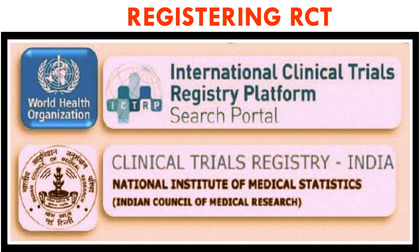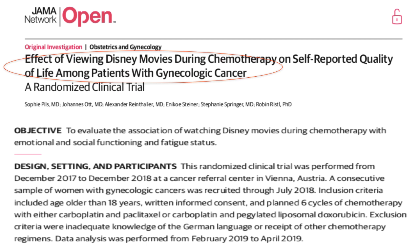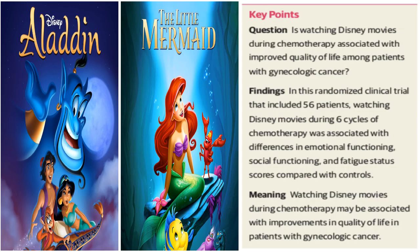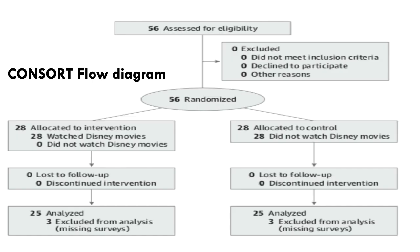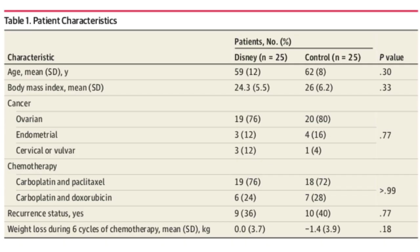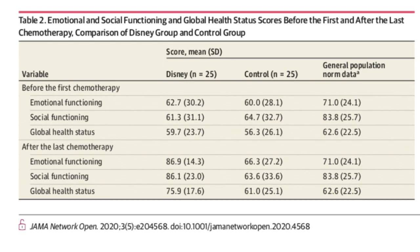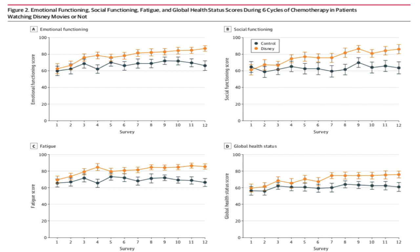An example RCT examined the effect of viewing Disney movies during chemotherapy on self-reported quality of life in patients with gynecological cancer. The study duration was one year. Females were enrolled and given six cycles of chemotherapy; they were shown Disney movies before and after each session. Fifty-six patients were used: 28 in the Disney movie group and 28 in the non-movie group. Both groups had similar demographic data. Patients were analyzed for emotional functioning, social functioning, and global health status.